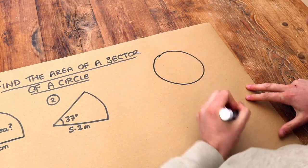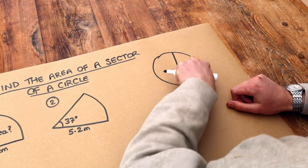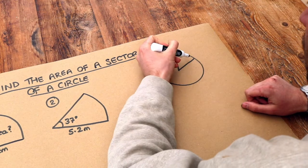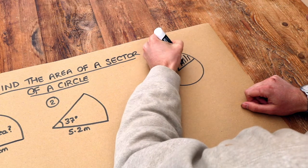Well, if we have a whole circle like this, then a sector is just a slice of that circle. You can imagine a slice of pizza. So that would be a sector.